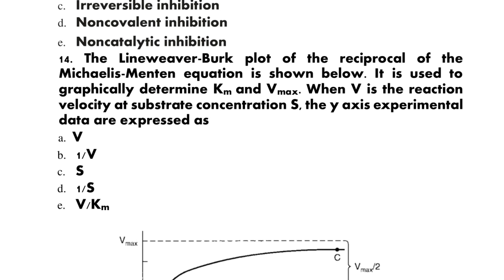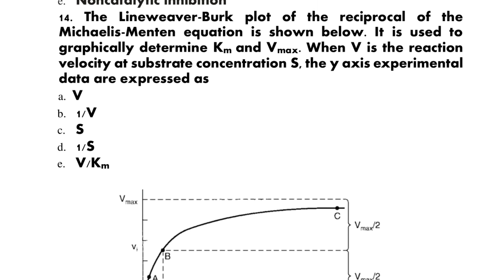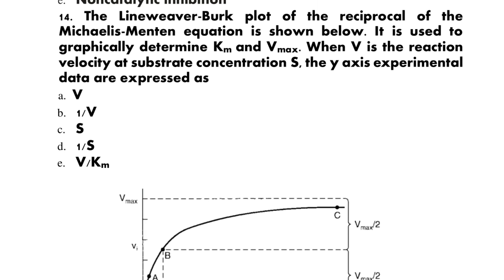Question 14: The Lineweaver-Burk plot of the reciprocal of the Michaelis-Menten equation is shown. It is used to graphically determine Km and Vmax. When V is the reaction velocity at substrate concentration S, the y-axis experimental data are expressed as: A) V, B) 1/V, C) S, D) 1/S, E) S/Km. The correct option is B: 1/V.